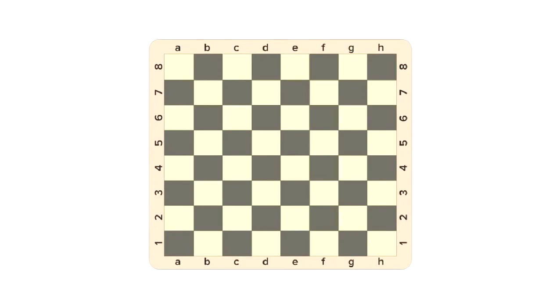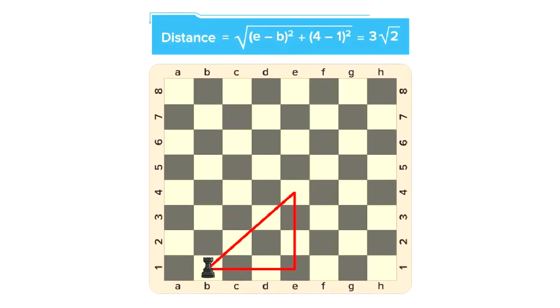Let's take an example to understand this better. Consider the game of chess and a chessboard. Now consider that you have a rook piece at B1 and you want to calculate how far is your piece from E4. If we simply calculate the Euclidean distance between the chessboard positions, the distance would come out to be (E-B) squared plus (4-1) squared, that is 3 under root 2.